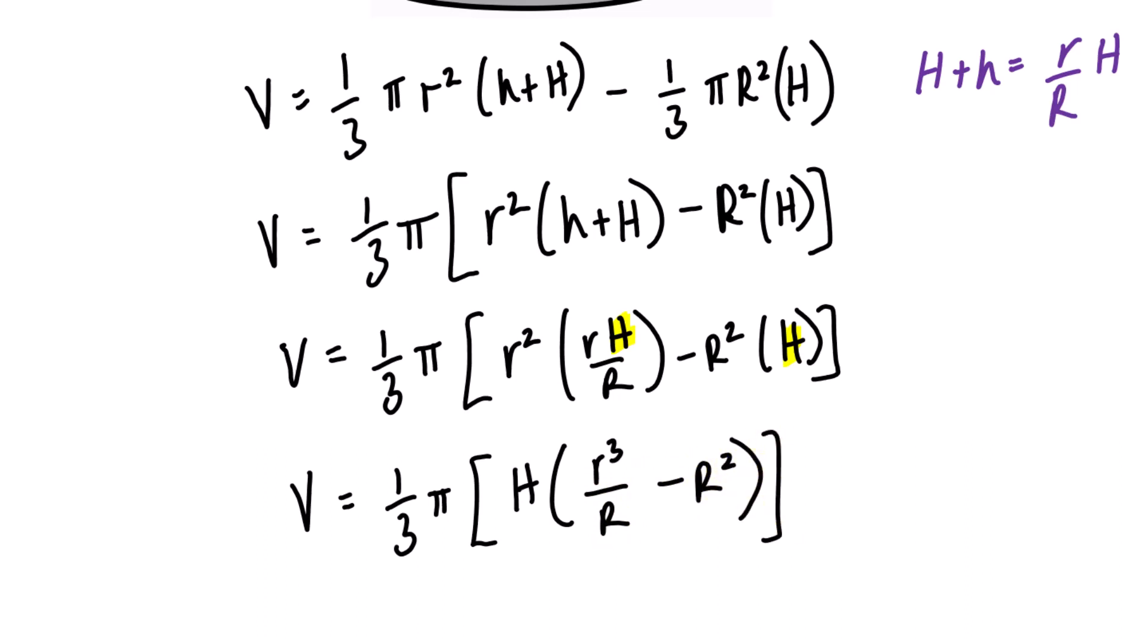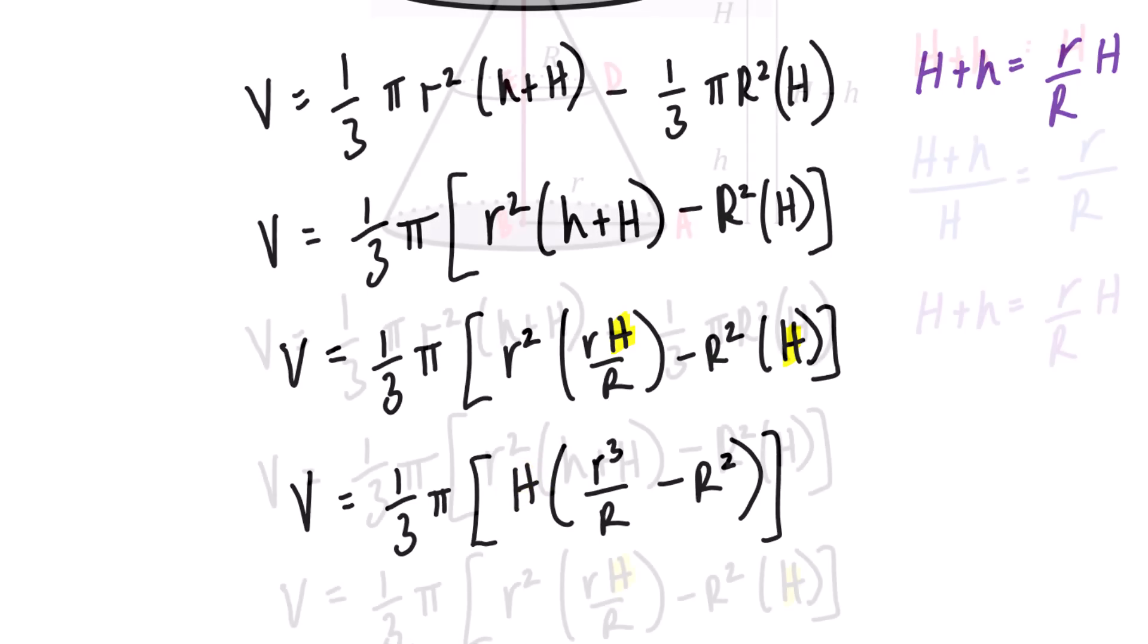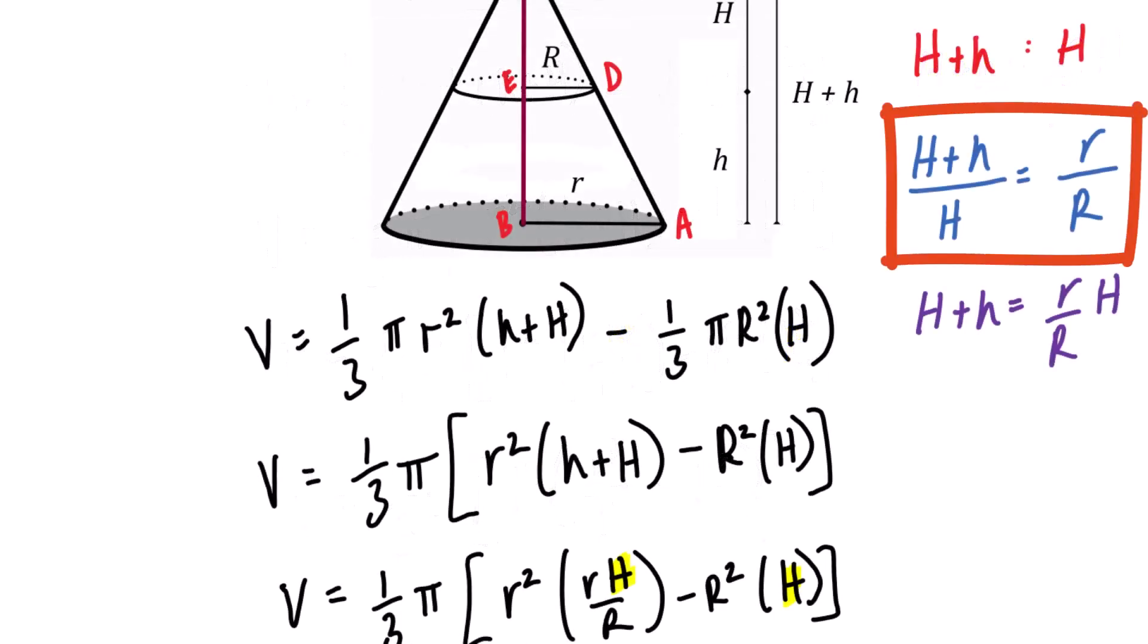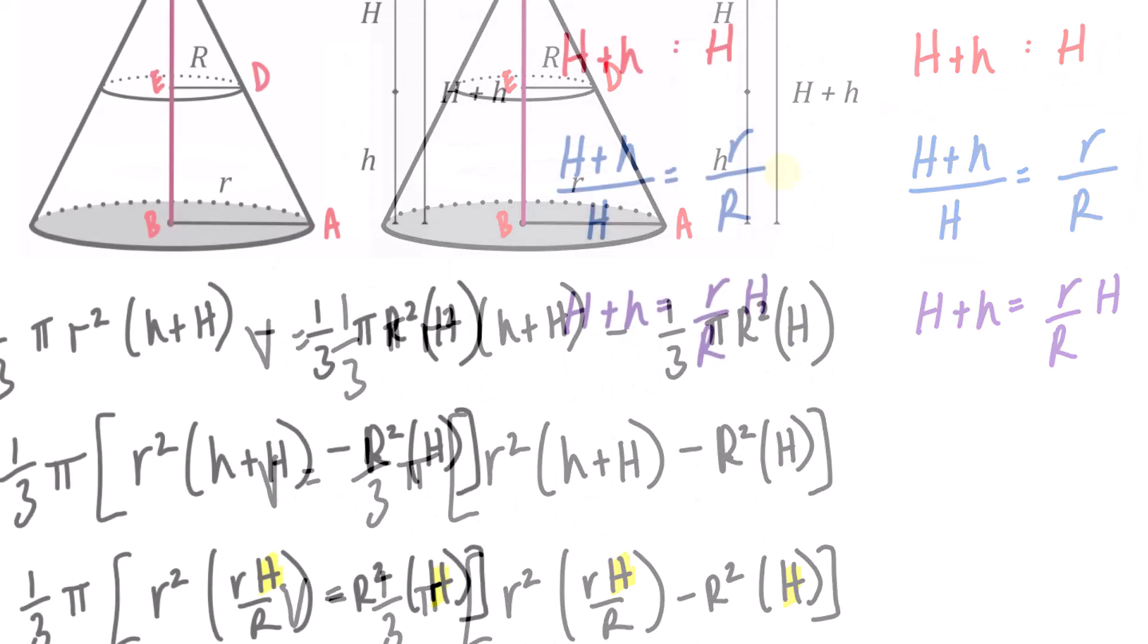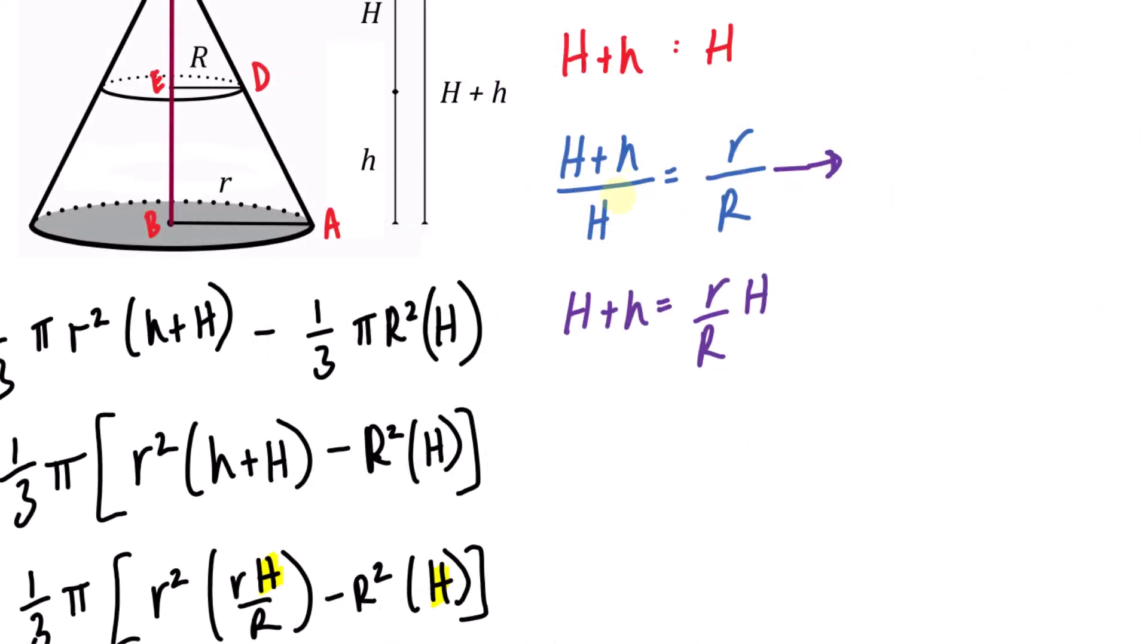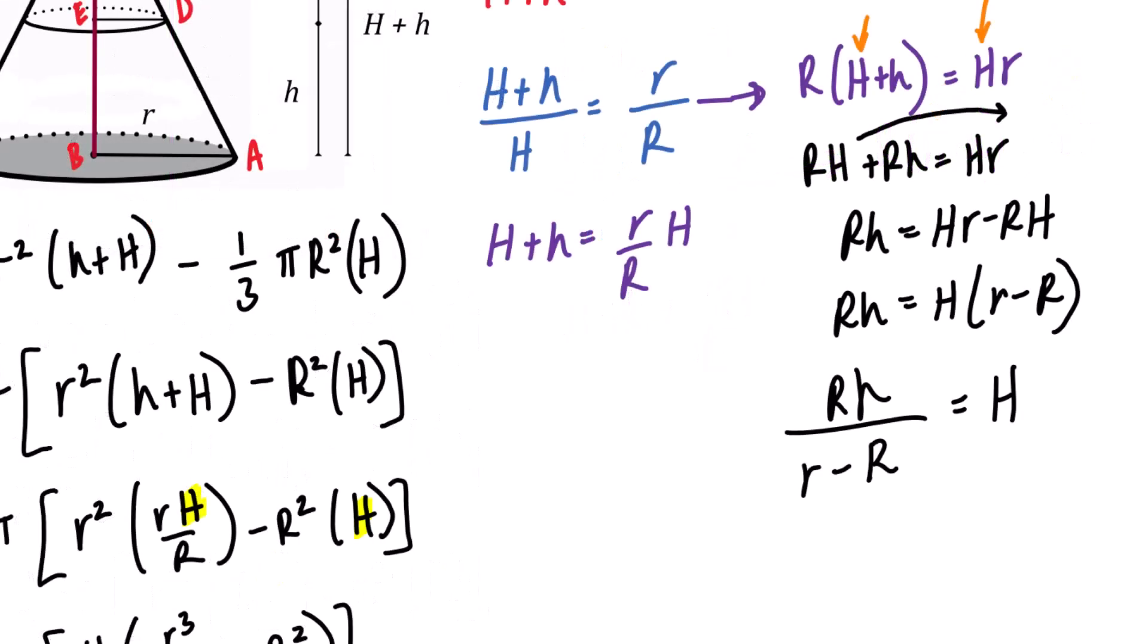Our next task is to get rid of that capital H. And we can do that if we go back to this equation that we set up in blue. So from here, I will cross multiply so that I have capital R multiplied to H plus lowercase h equals hr. My goal is to isolate for that capital H. With a bit of algebraic magic, capital H eventually isolates to r times h over R take away r.